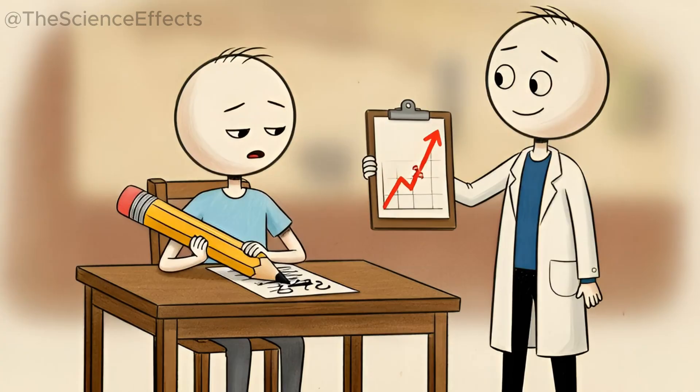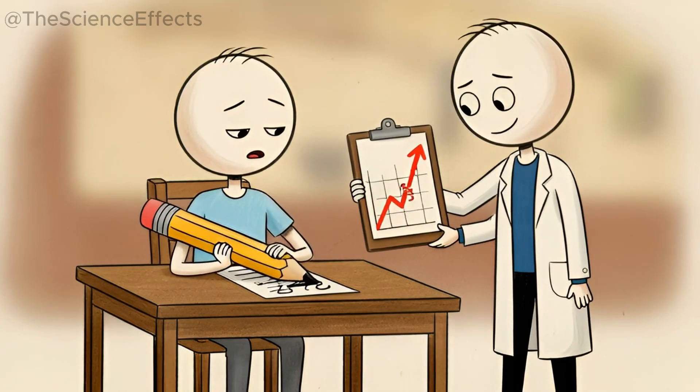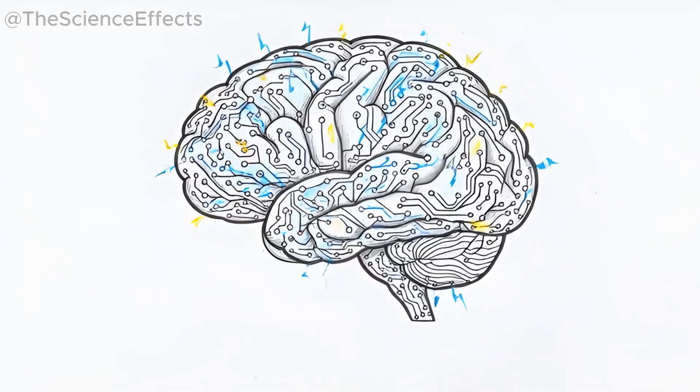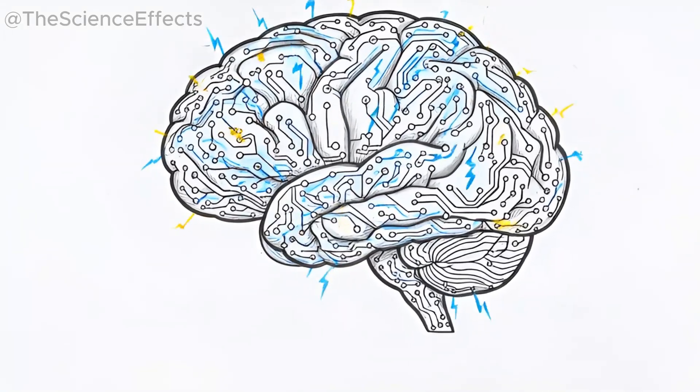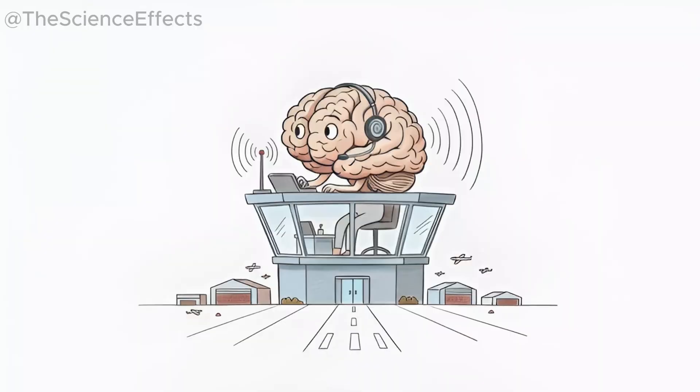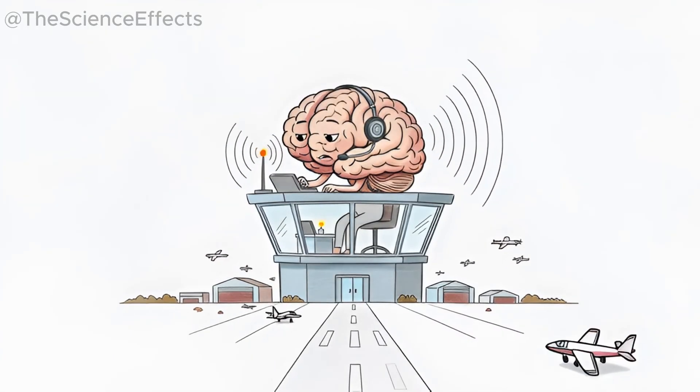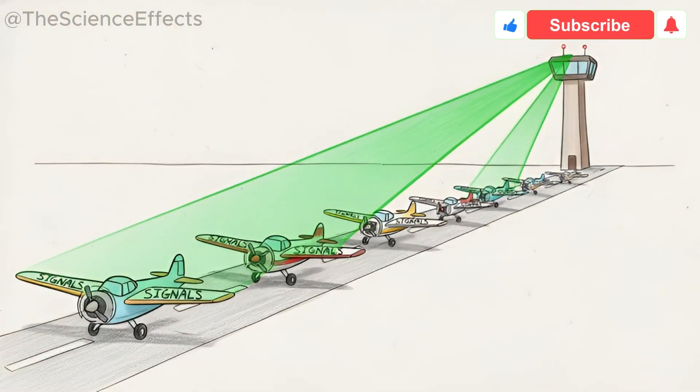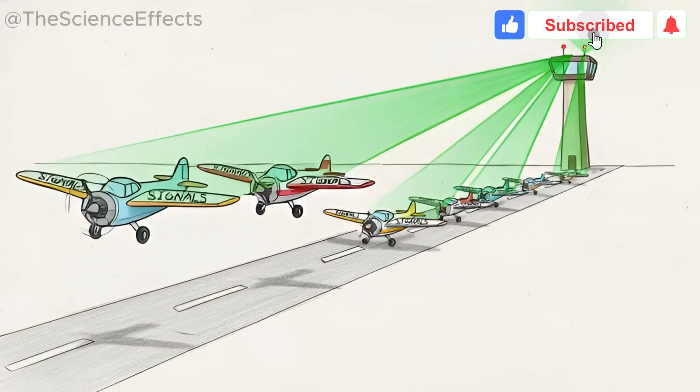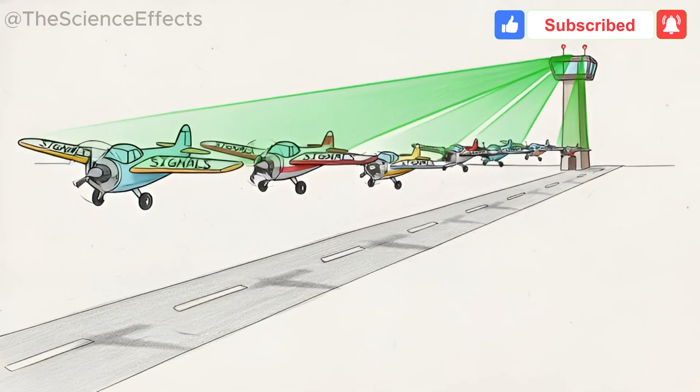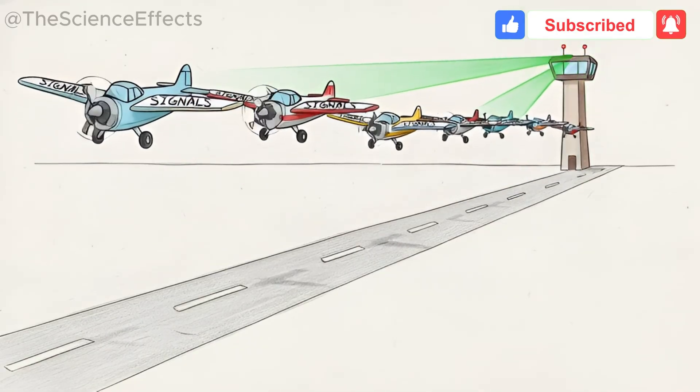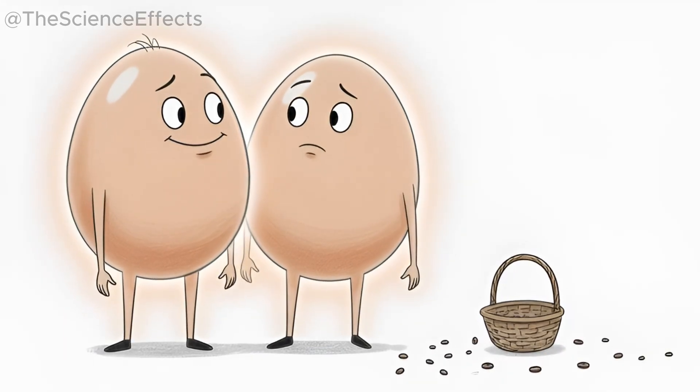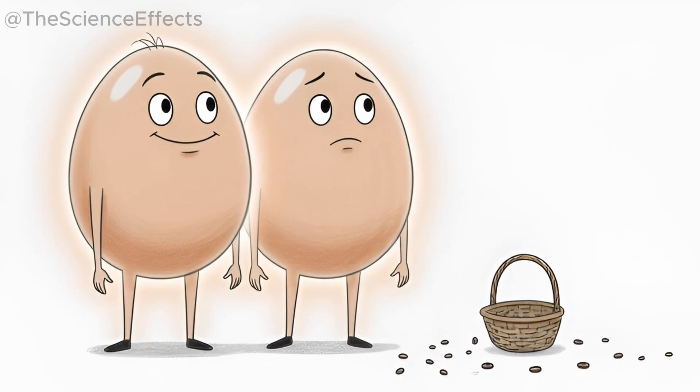But why does this matter? Because your brain is electricity. It relies on signals—fast, precise, coordinated signals. Remember the airport metaphor: choline equals the control tower, acetylcholine equals the communication system, eggs equals the upgrades that keep the tower running smoothly. Two eggs give you nearly half the daily requirement. Most foods don't even come close.